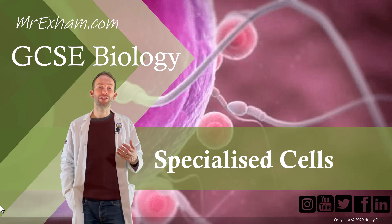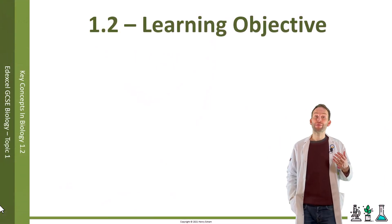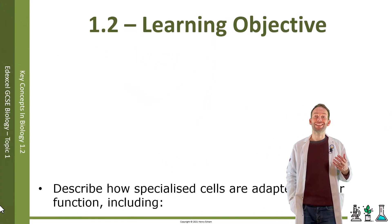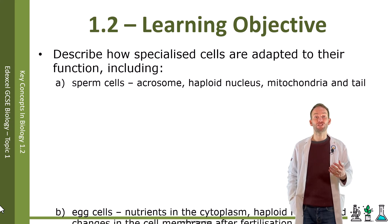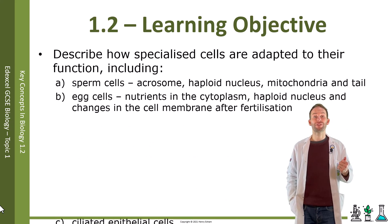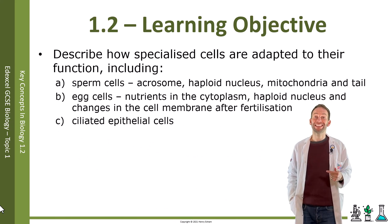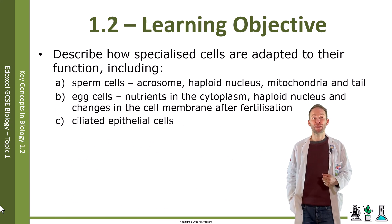Objective 1.2: describe how specialized cells are adapted to their function, including sperm cells, egg cells, and ciliated epithelial cells.